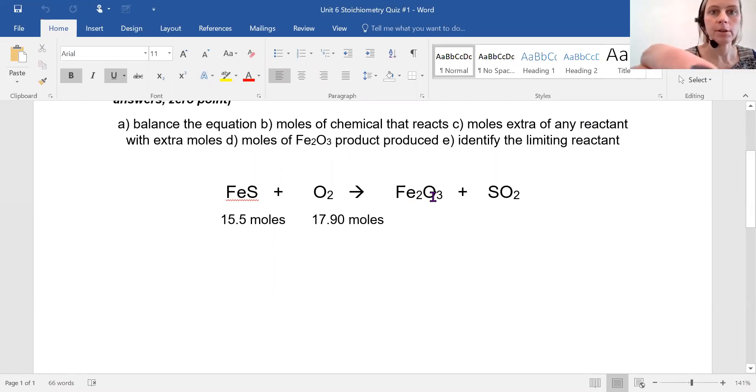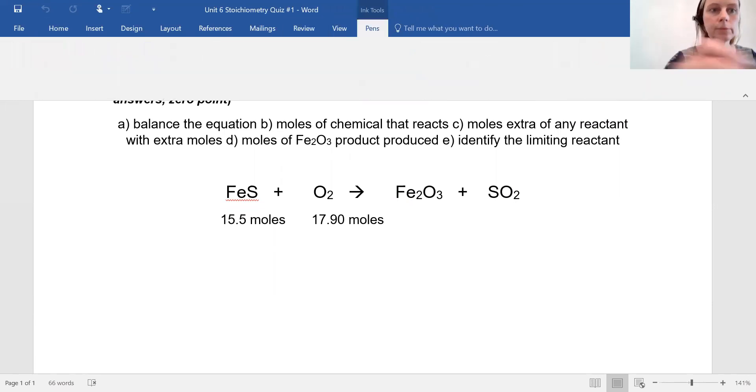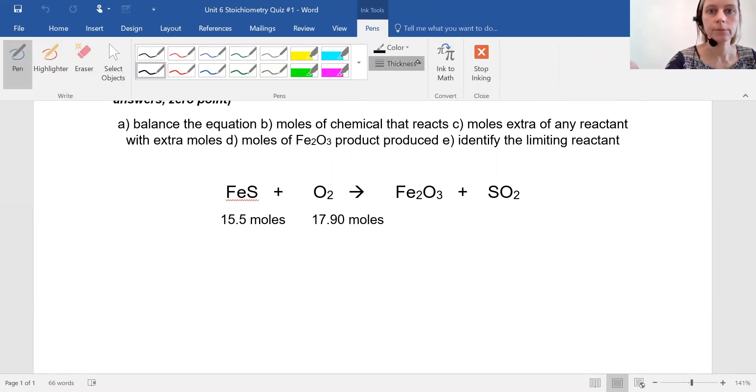So the first thing is, let me get my inking on here. First thing is I have to balance it. So if I put a four here, that gives me four iron, then sulfur, I need to put four in front of my sulfur dioxide. I then have 14 oxygen. So I need to place a seven in front to make 14 oxygen. This is the first thing that needs to be done. So double check, triple check your work that this reaction is actually balanced.